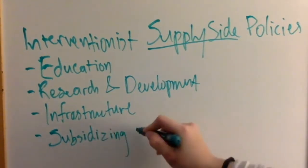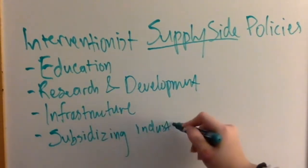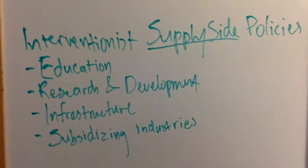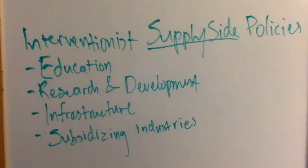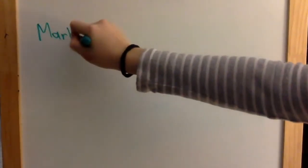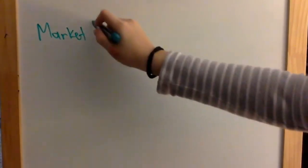Number four: industrial policies. This refers to policies targeting specific industries to subsidize for growth. Depending on what industry it is, long-run aggregate supply may or may not shift outwards. A good indicator is externalities — if there are positive externalities, long-run aggregate supply will likely shift outwards. In all cases, however, short-run aggregate supply will definitely shift outwards.